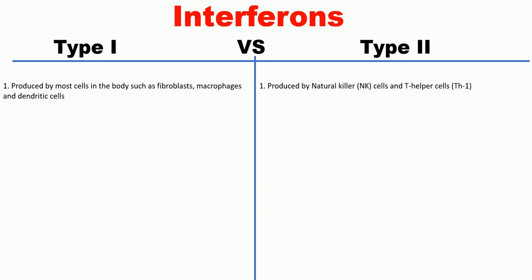Difference between type 1 and type 2 interferons. Type 1 interferons are produced by most cells in the body, such as fibroblasts, macrophages, and dendritic cells. Type 2 interferons are specifically produced by natural killer cells and T-helper cells, specifically Th1.